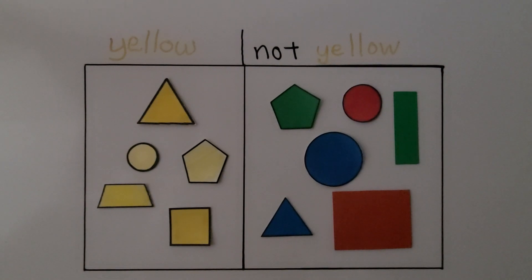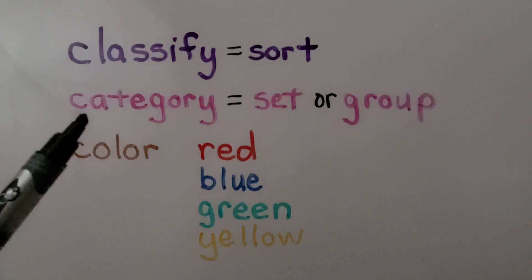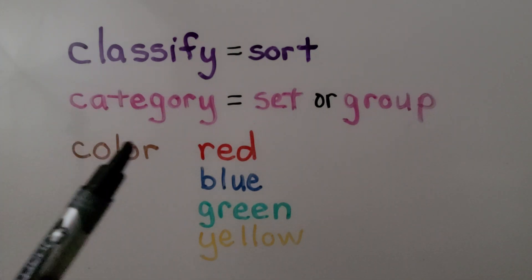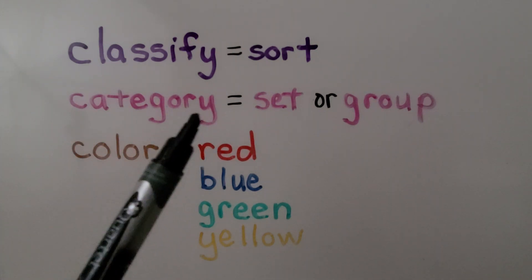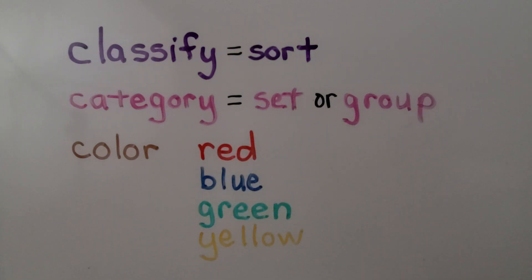So the two categories for these shapes are yellow for this set and not-yellow for this set. Because we're classifying them by color, their shape is not important. When we classify objects, we sort them into a category. A category is a set or group.